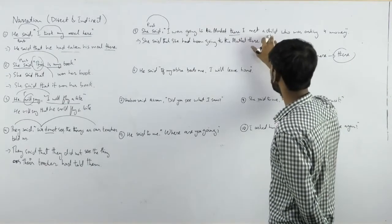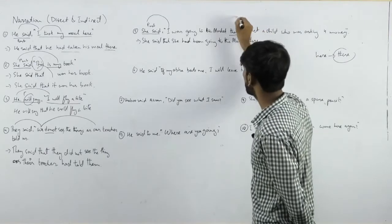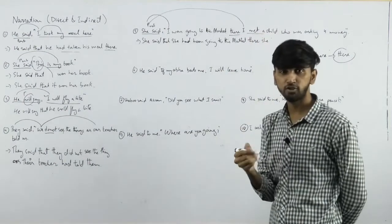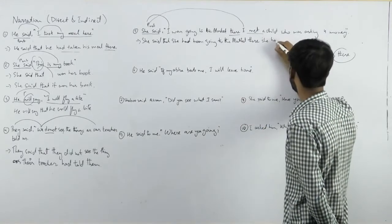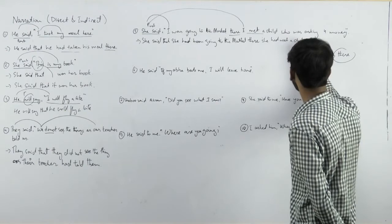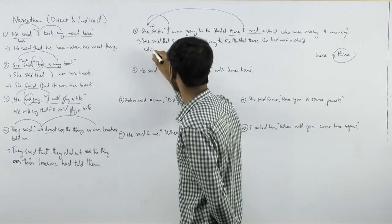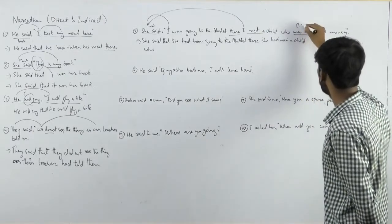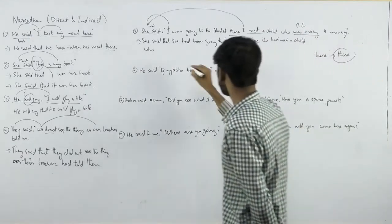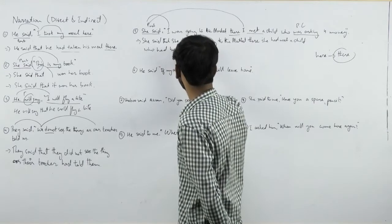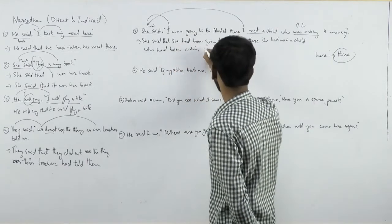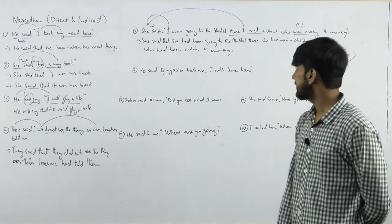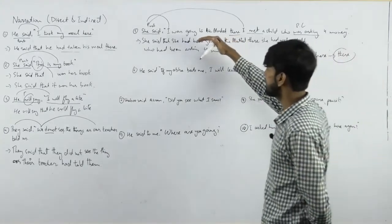Past indefinite 'I met' changes to past perfect: she had made — she had met a child. Then 'who was asking for money' is past continuous, which changes to past perfect continuous: who had been asking for money. So all three sentences are changed.